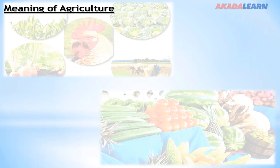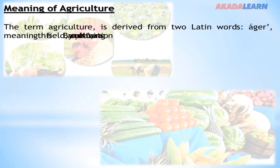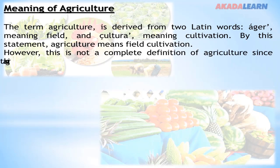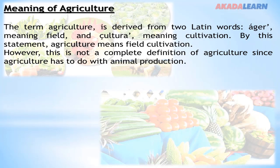Agriculture is a word that is derived from two Latin words: ager, meaning field, and cultura, meaning cultivation. By this statement, agriculture means field cultivation. However, this is not a complete definition of agriculture, since agriculture has to do with animal production as well.